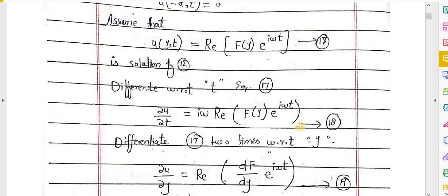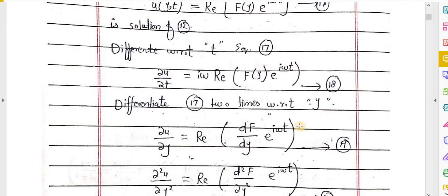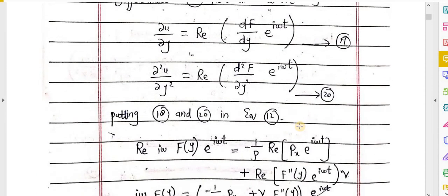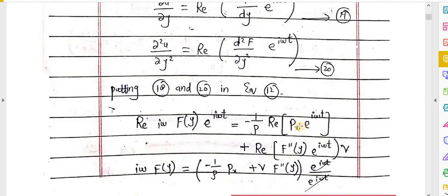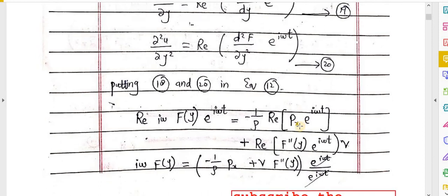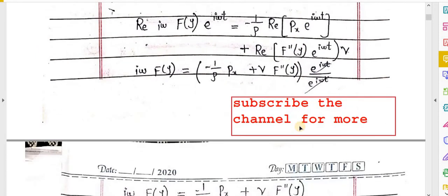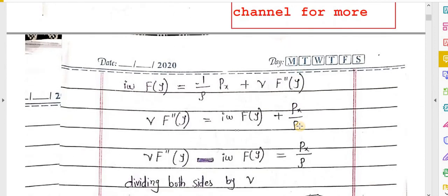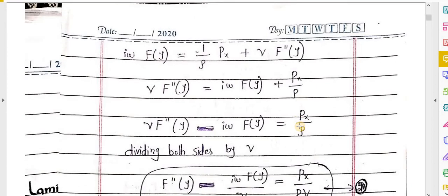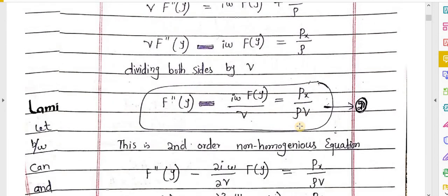After obtaining equation 18, we differentiate equation 17 two times with respect to y to get equation 19, and after the second derivative we get equation 20. Substituting equations 18 and 20 into equation 12, we obtain a resulting expression.